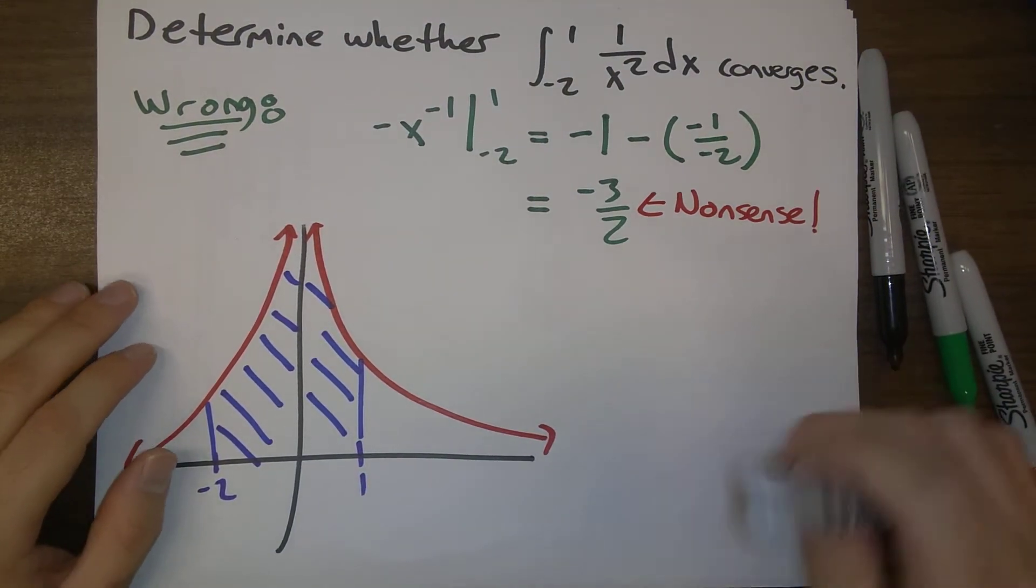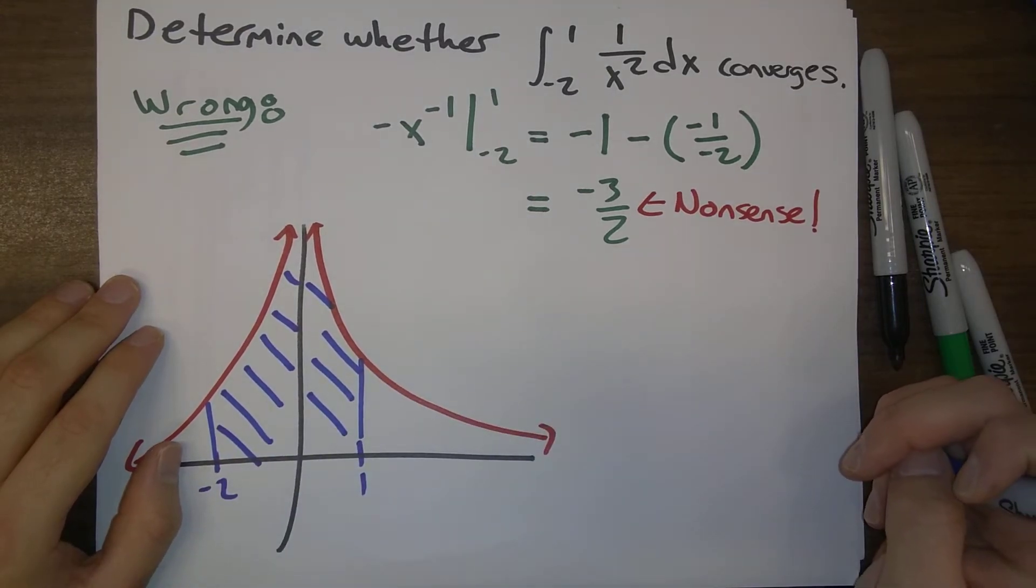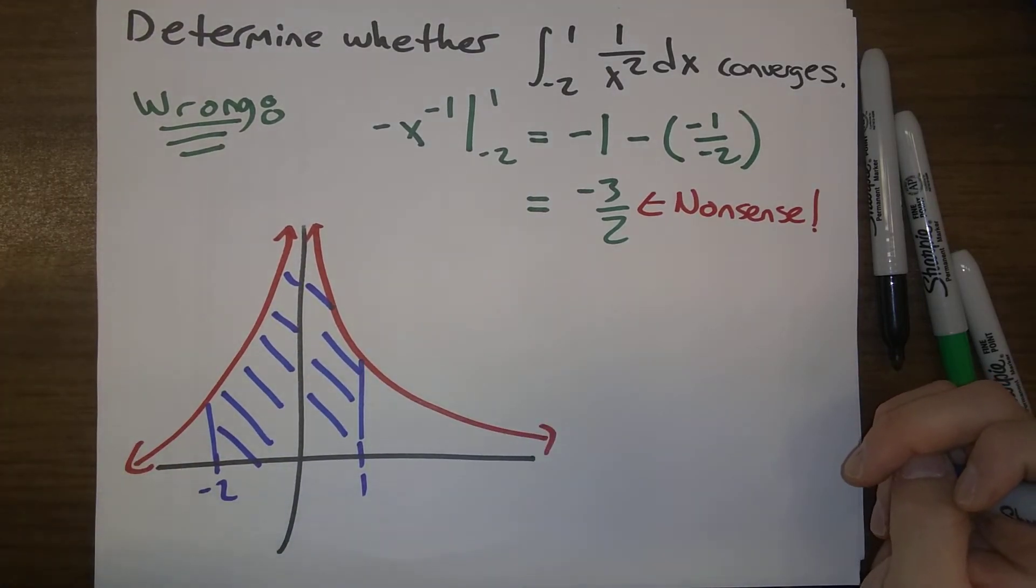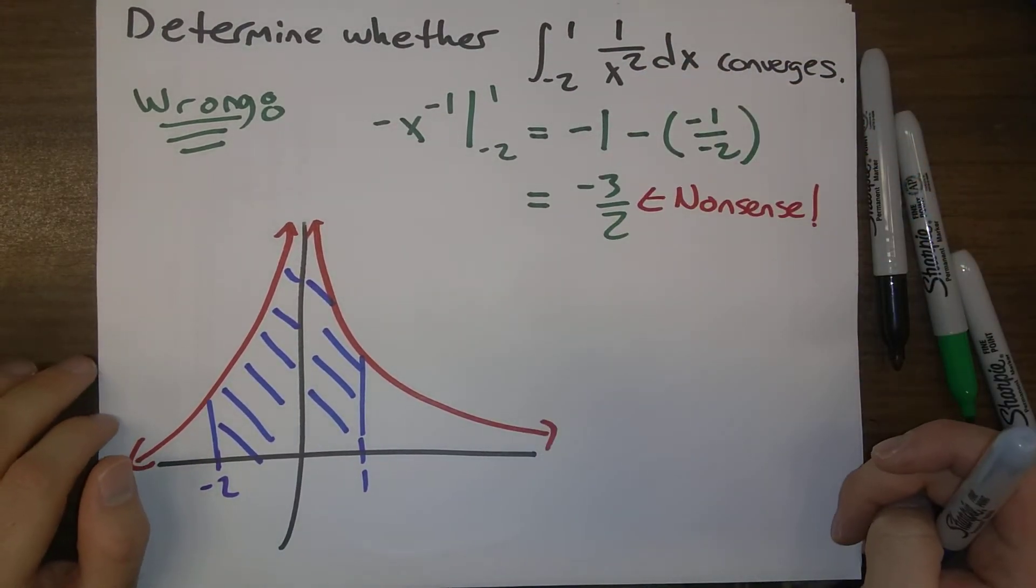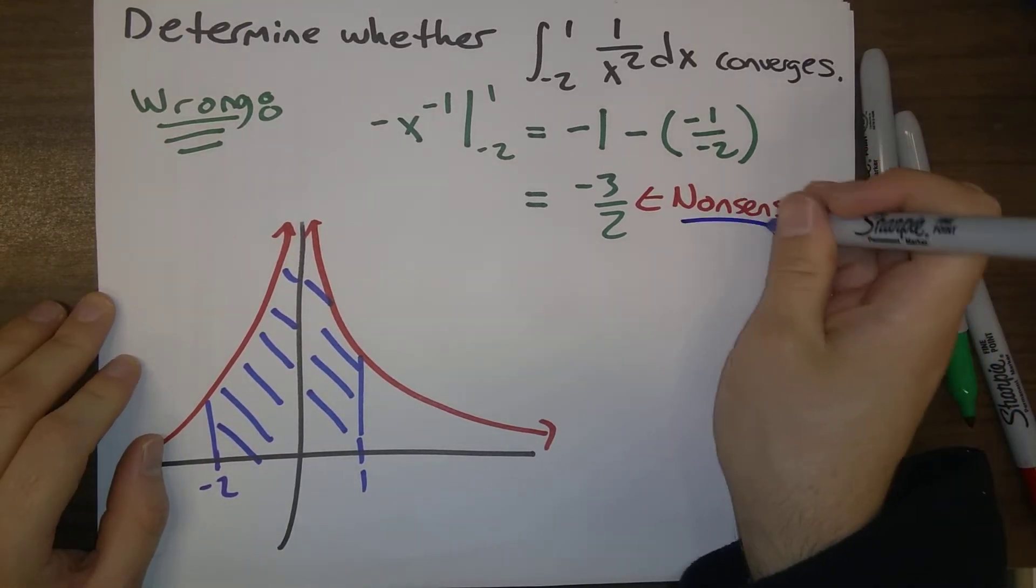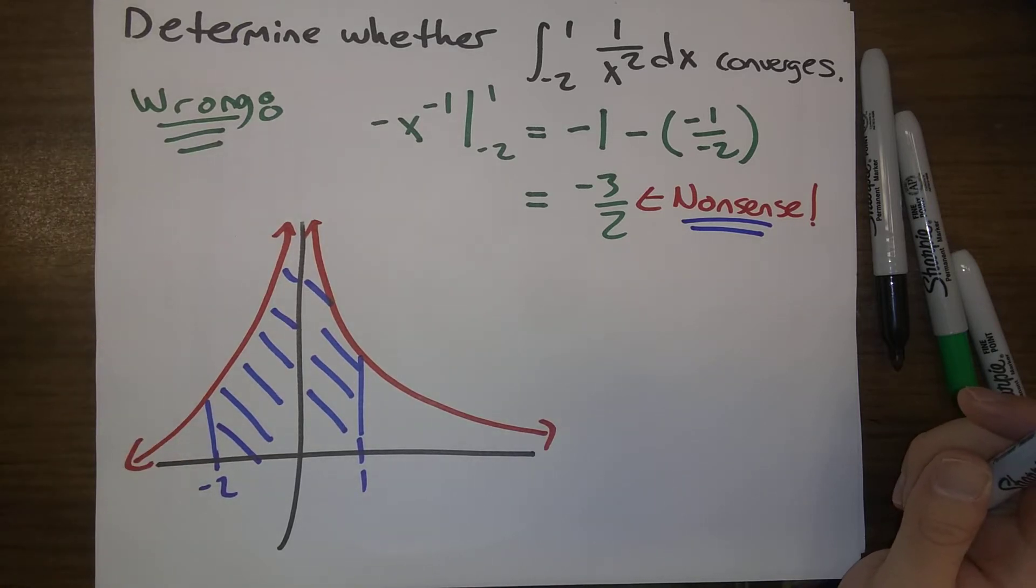But realize that this area is completely above the x-axis. Our function isn't negative. Our function is positive. We're integrating something positive. How are we getting a negative answer? So that shows that our negative 3 halves answer is just utter nonsense.